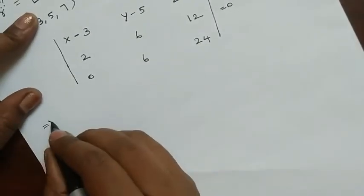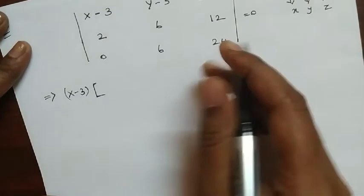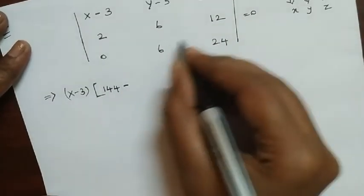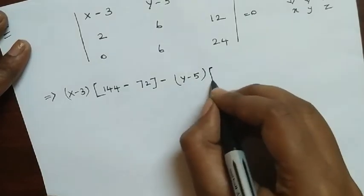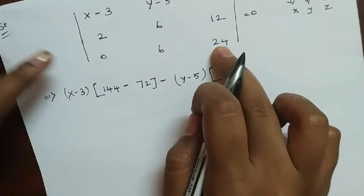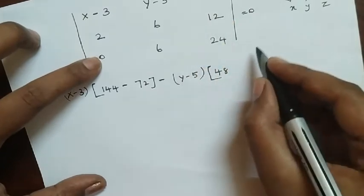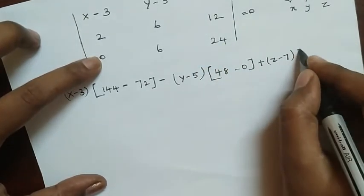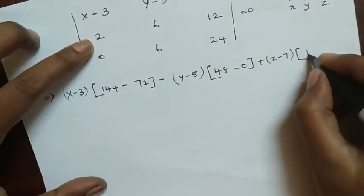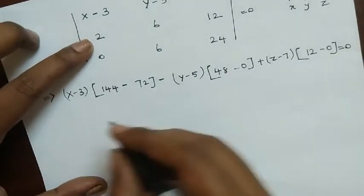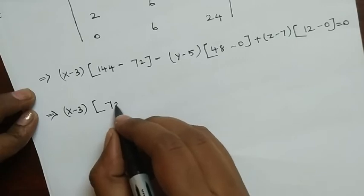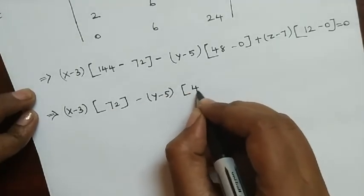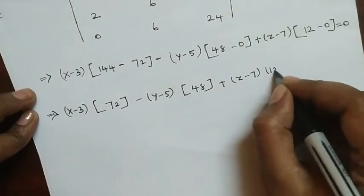Expanding the determinant: (x−3)(6·24 − 6·12) − (y−5)(2·24 − 0·12) + (z−7)(2·6 − 0·6) = 0. That gives (x−3)(144 − 72) − (y−5)(48 − 0) + (z−7)(12 − 0) = 0, which simplifies to 72(x−3) − 48(y−5) + 12(z−7) = 0.